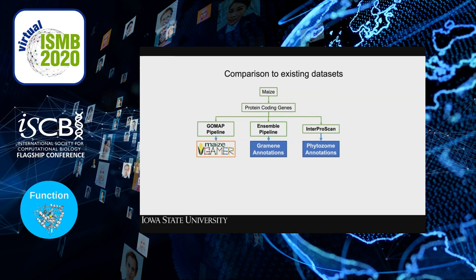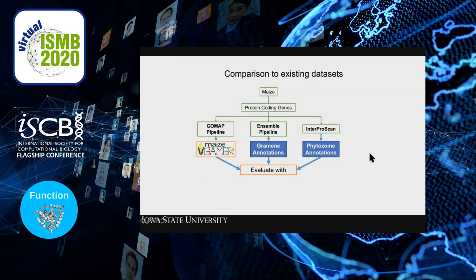Once we generated this dataset, it was important to determine whether it was better than others already available. The existing maize datasets for coding genes were from Ensembl, which generated the Gramene annotations, and InterProScan, which generated the Phytosome annotations. We took maize protein coding genes, sent them through the GoMap pipeline, compared against those two systems, and evaluated with a gold standard dataset from MaizeGDB — the Maize Genetics and Genomics Database — where curators pulled data from the literature.